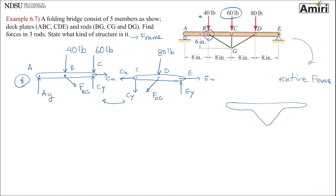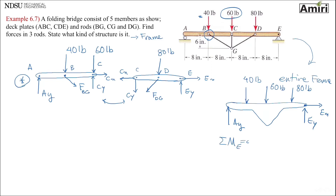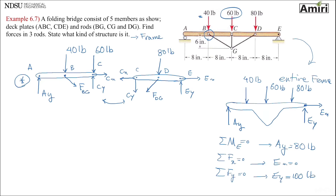Outline of the entire frame — something like that. Point A is a roller, so it has an AY. Point E is a pin, so I put EX and EY there. Then I have 40, 60, and 80-pound loads. If you write three equations — summation of moments about E equals 0, summation of forces in X equals 0, summation of forces in Y equals 0 — the first gives AY equals 80 pounds, the second gives EX equals 0, and the third gives EY equals 100 pounds.